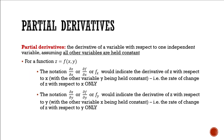A partial derivative is the derivative of a variable with respect to one independent variable, assuming that all other variables are held constant. What this implies is that when we have a function of more than one variable — z is a function of both x and y — we're looking at how z would be changing with respect to only one of the variables, assuming the other variables are held constant.